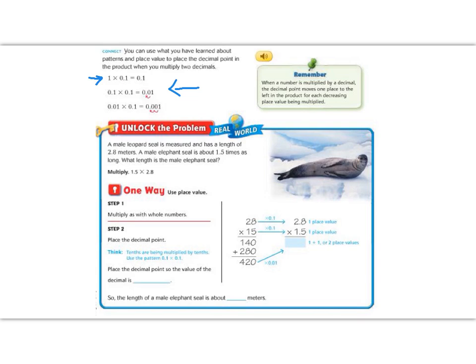One way to do this is to use place value. We multiply with whole numbers. We're going to line them up just like we would normal multiplication. So if we do 5 times 8 we get 40, so the 4 carries and we write the 0. 2 times 5 is 10 plus 4 is 14. Then we have the magic 0, then we multiply 1 times 8 is 8 and 1 times 2 is 2, so we get 280.